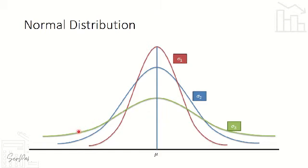So yung green curve — ibig sabihin nito, mataas ang standard deviation, kaya each of the distributions are malayo from the mean. Halimbawa, ang average height natin is 5'4, but some students are only 4'8, 4'9, or 5 flat. Compare that to a narrower curve — pwede 5'5, 5'6, or 5'3, 5'2 lang — magkakalapit yung height nila, hindi sila naglalayo. Unlike sa green curve where 5'4 then yung iba naman ay 4'8 — malayo ang deviation.